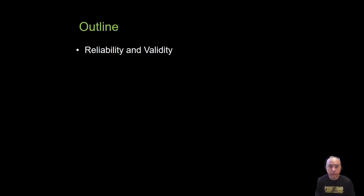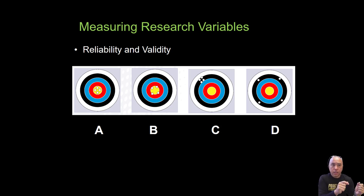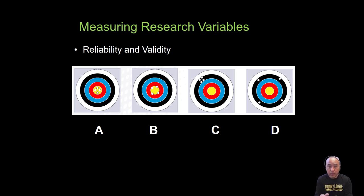In this video we're going to cover reliability and validity, as well as the intraclass correlation coefficient in estimating reliability. We often think of reliability and validity as consistency and reproducibility, and accuracy respectively. Those are true, but there are certain nuances in the definition, specifically when looking at validity.